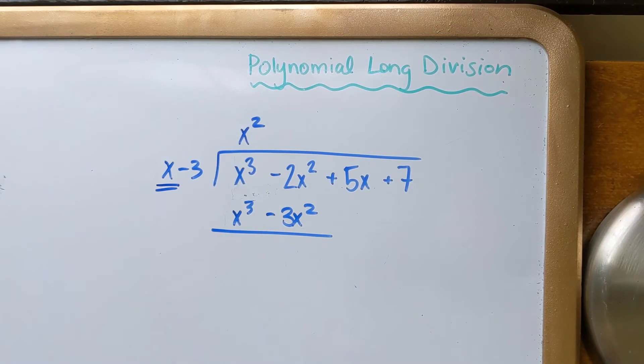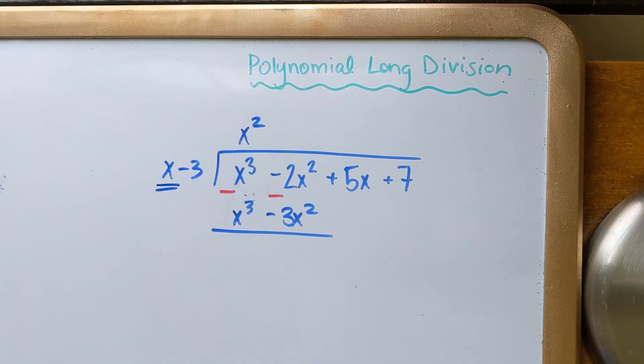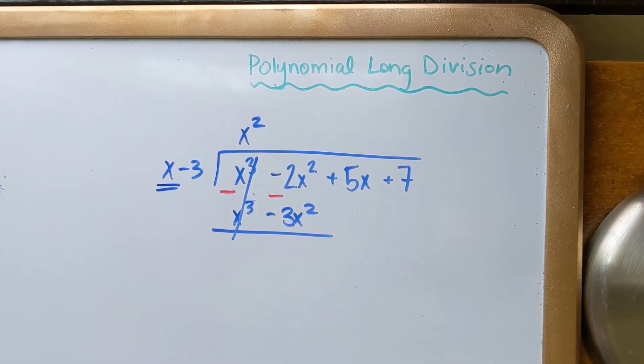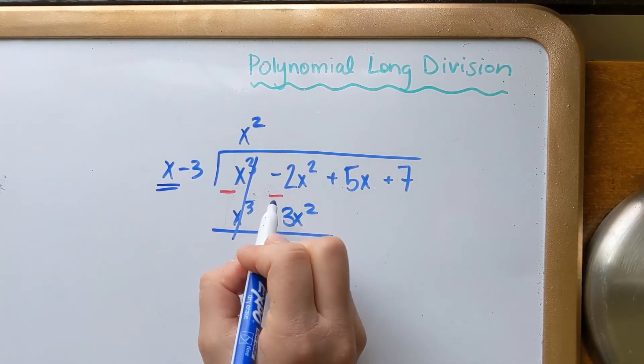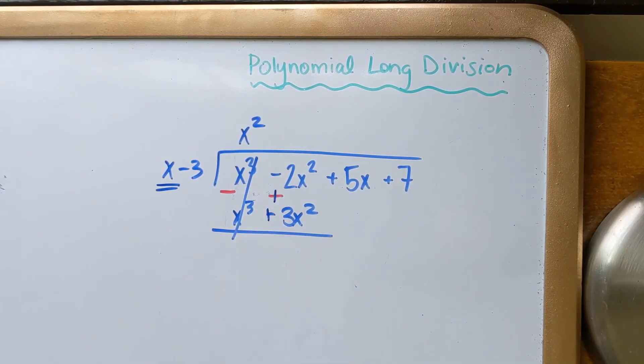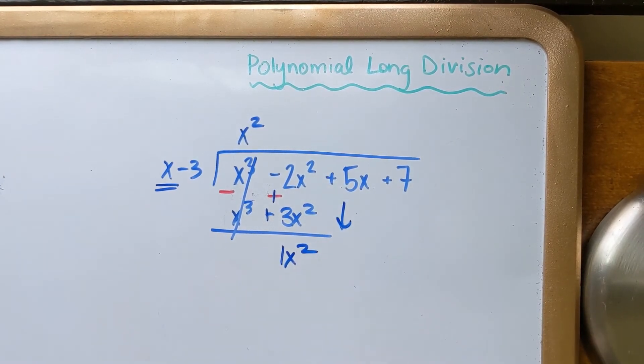I also said that later on we'd be doing a problem that had double negatives. So take a look at this. This is where you have to be very careful when you're subtracting. So subtraction, subtraction. And notice, x cubed minus x cubed is just 0. But over here, we have negative 2x squared minus negative 3x squared. You got to be so careful when you're doing these. So what I would do is I would turn it into plus a positive. So negative 2x squared plus positive 3x squared. That's going to be 1x squared. And I'm going to drop down my 5x.